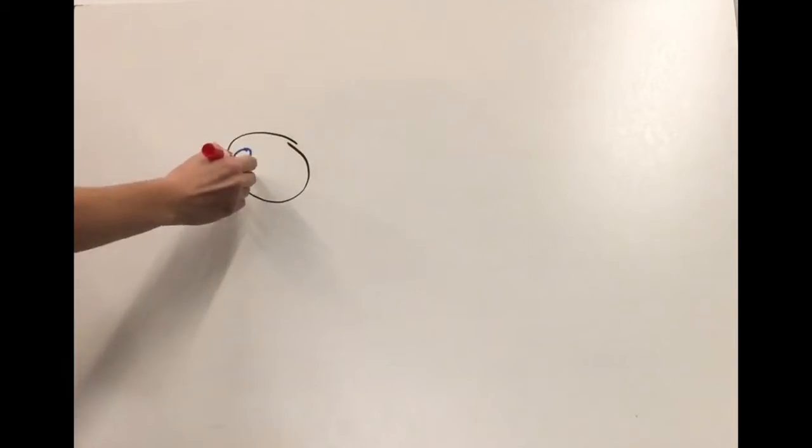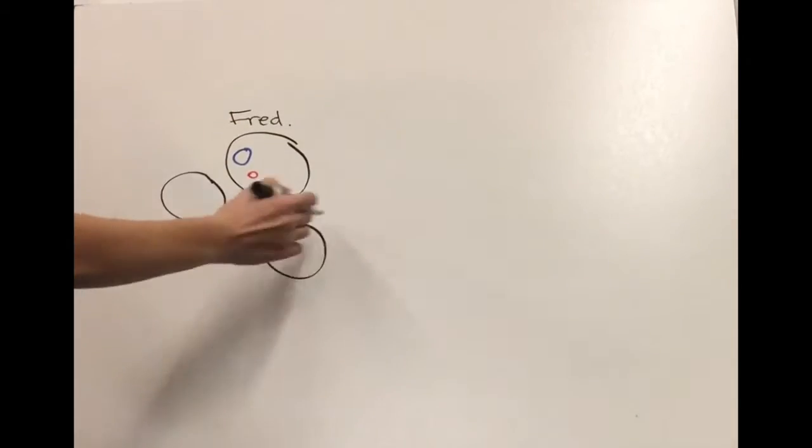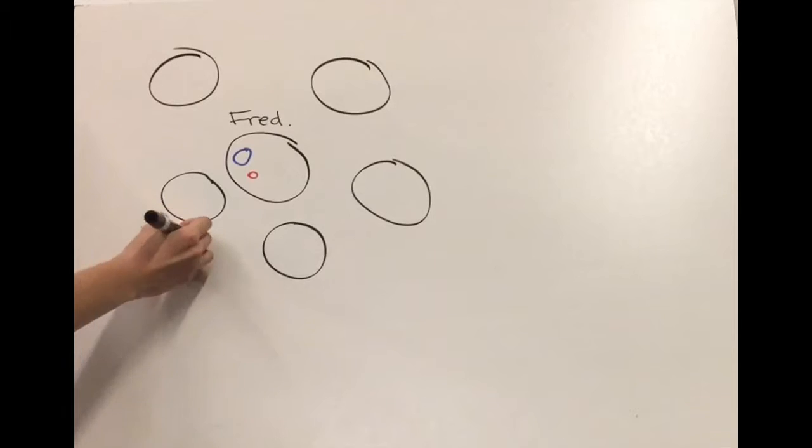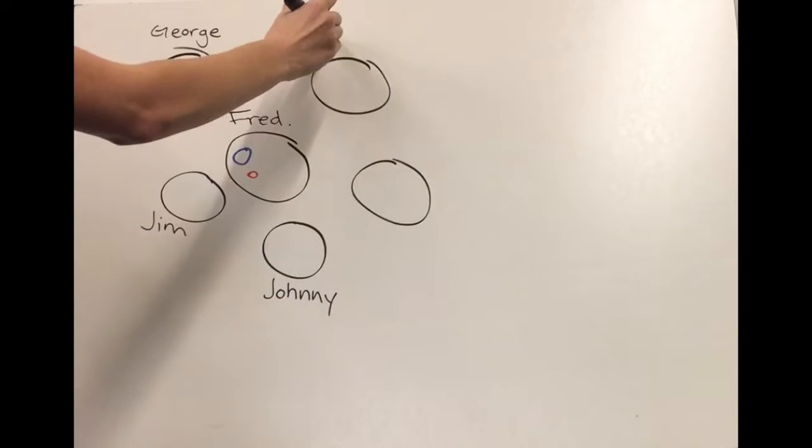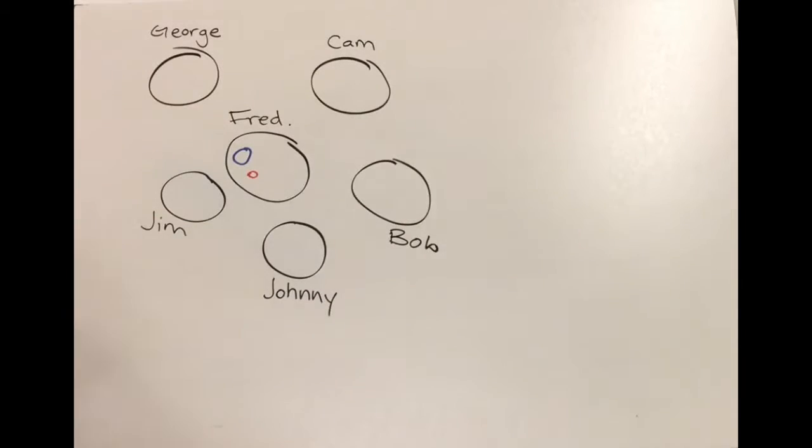This is Fred. Fred is an infectious bacterium. Fred has lots of bacterial friends, and they were all living happily until antibiotics entered the picture. Now, many of Fred's friends are dying from an antibiotic called colistin, that green stuff that you see here.